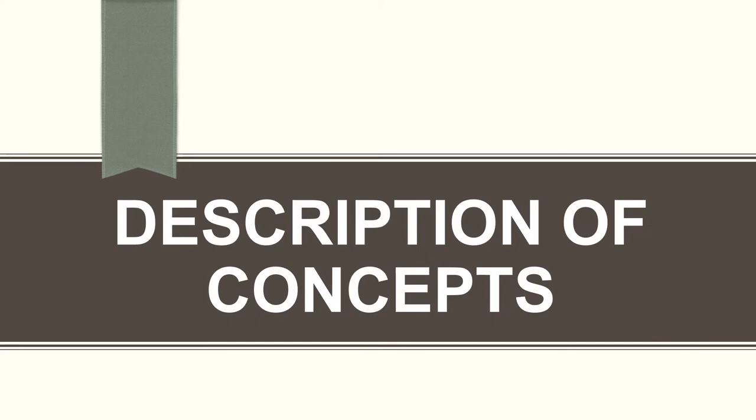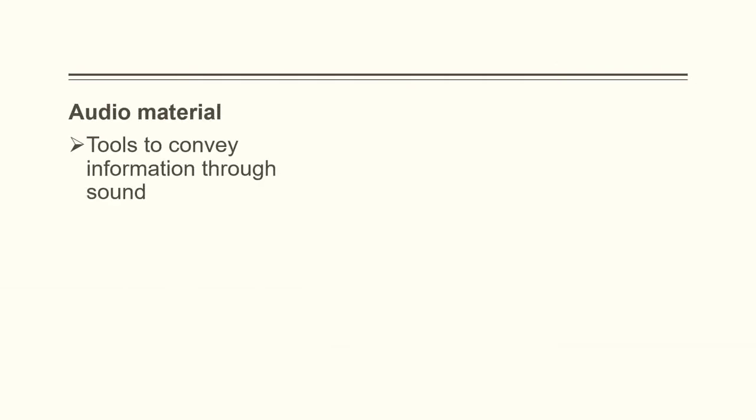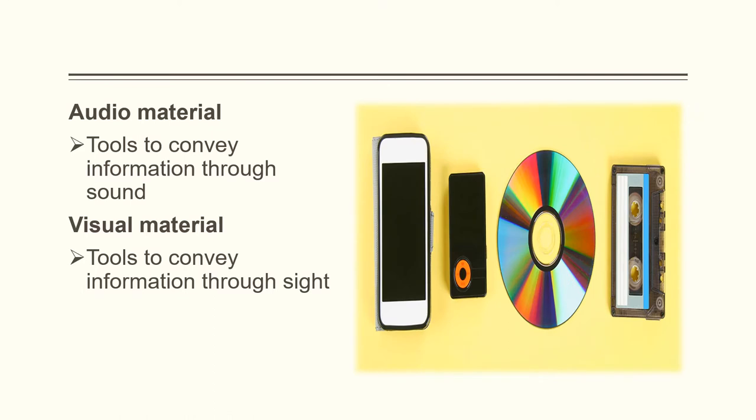Description of concepts. We have audio material and visual material. Audio materials are tools to convey information through sound. For visual materials, they are tools to convey information through sight.